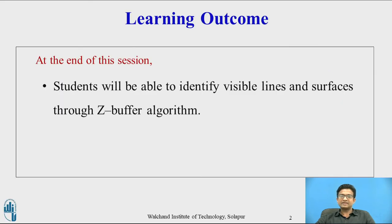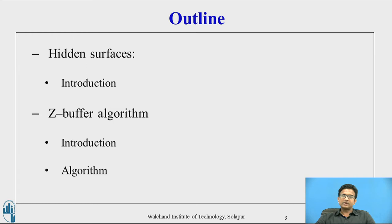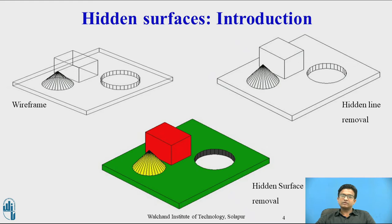The learning outcome is that at the end of the session, the student will be able to identify visible lines and surfaces through the Z-buffer algorithm. First we are going to see what is a hidden surface, and after that what is the Z-buffer algorithm. In the diagram you can see three images: wire frame, hidden line removal, and hidden surface removal.